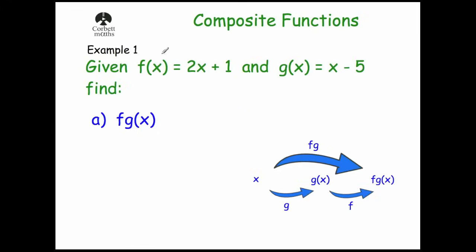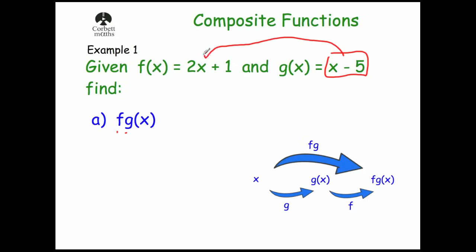Let's have a look at our first example. Given f of x equals 2x plus 1 and g of x equals x minus 5, find fg of x. So here we've got x, we apply g first of all and we get g of x, and then we apply f and we get fg of x. So what we want to do is apply g and then apply f. So here we've got g of x. If we take this x minus 5 and put it into our f of x in for the value of x, we can then expand that and find fg of x.